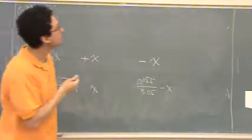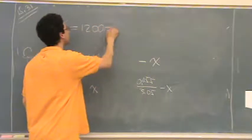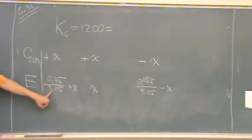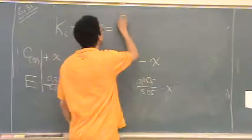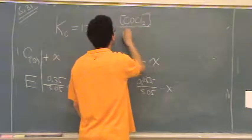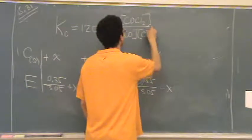Kc is equal to, I think it was 1,200, is that right? 1,200. And I'm going to write the equilibrium expression with K using these values. So it was COCl2 over CO times Cl2.